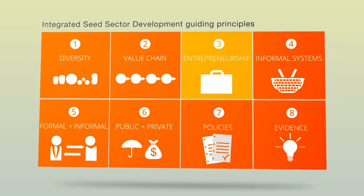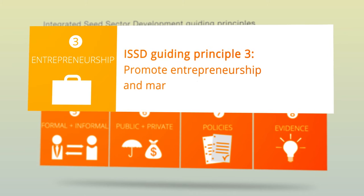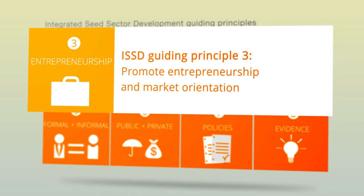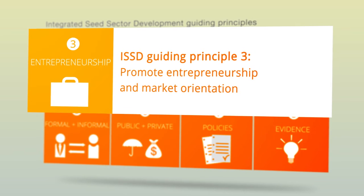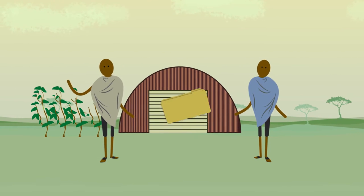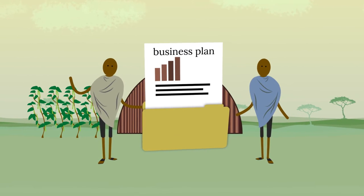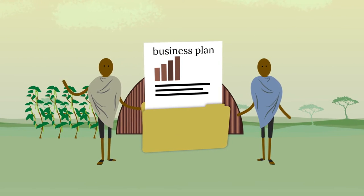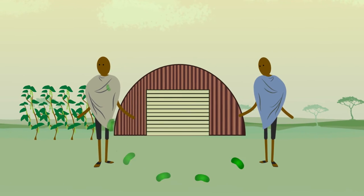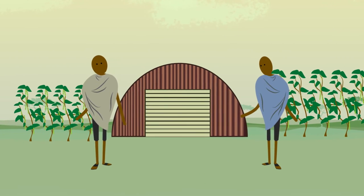ISSD Guiding Principle 3: Promote entrepreneurship and market orientation. Entrepreneurship is an important incentive for sustainable development. Entrepreneurship is about producing, marketing and providing seed services for a profit.